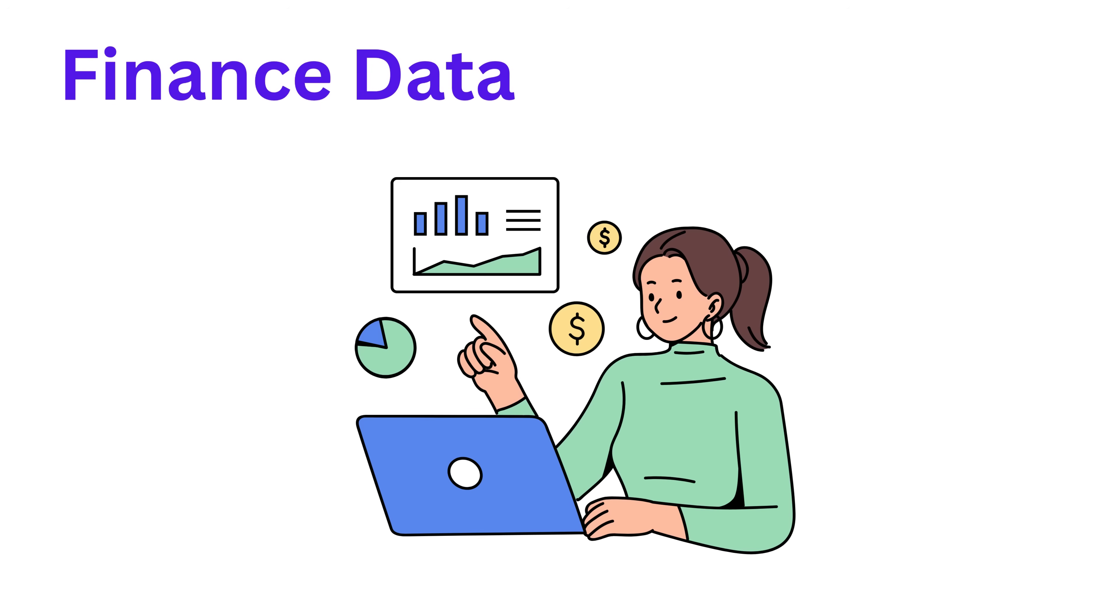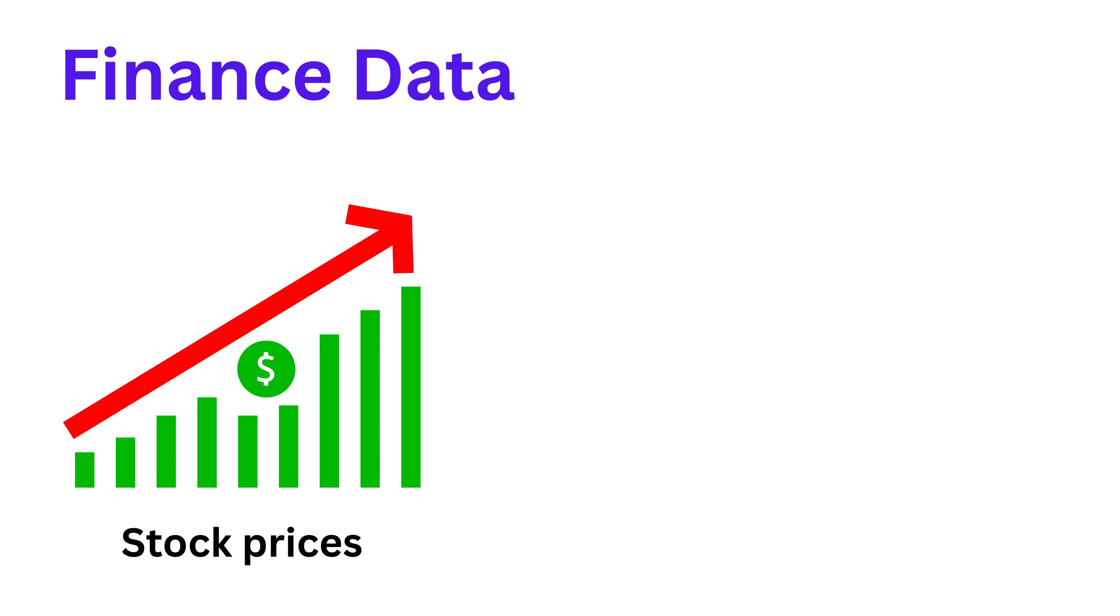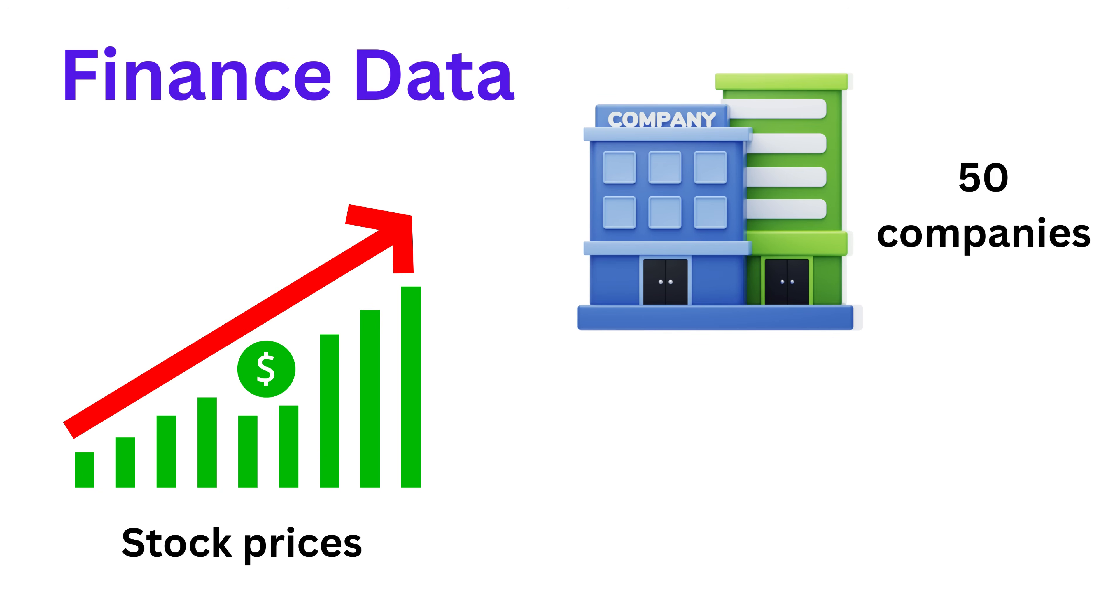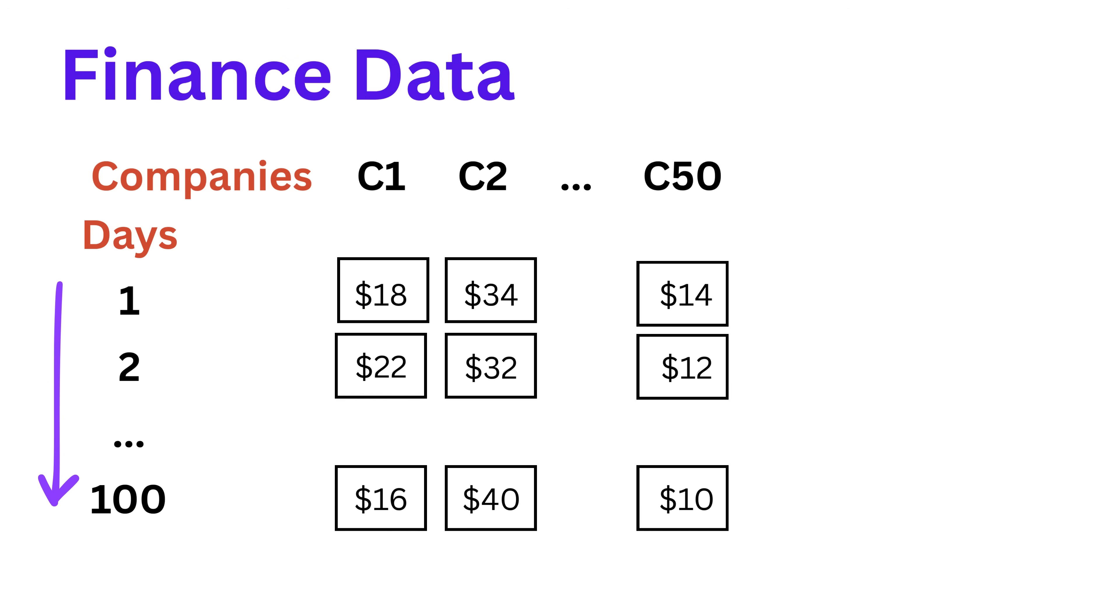Now let's move to finance, a completely different field. Suppose you're tracking the stock prices of 50 companies over 100 days. That's a two-dimensional tensor. Each row is a day, and each column is a company. But if you also want to store extra details per stock, like opening price, closing price, and trading volume, then each entry becomes a group of values.